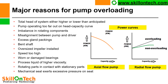Here in these two curves you can see: in an axial flow pump, capacity is on the X axis and head is on the Y axis. Power drawn is more initially in axial flow pumps and then it drastically comes down. But in the case of radial flow pumps, power increases progressively like this.